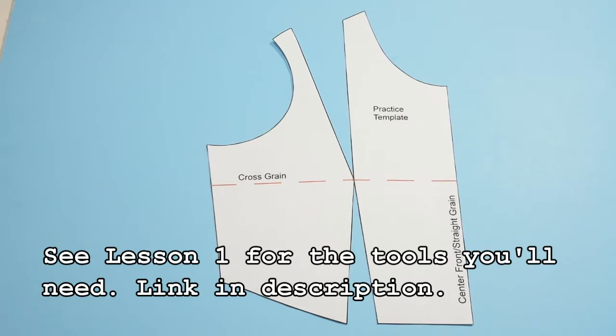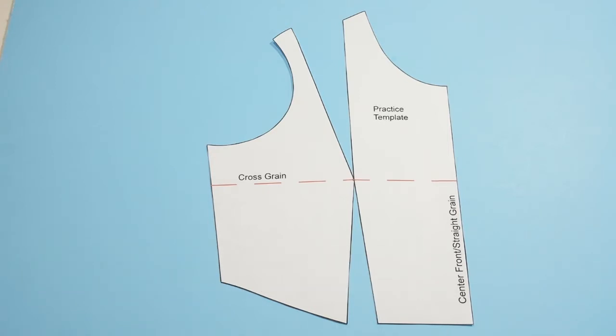We're using the same mini sloper we used in Lesson 1. In this lesson, we'll combine darts or move one dart into an existing dart. Then I'm also going to show you how to change your dart into a tuck. And just so you know, you don't have to combine darts in order to change them into a tuck or anything else.